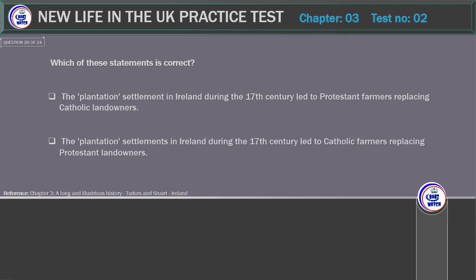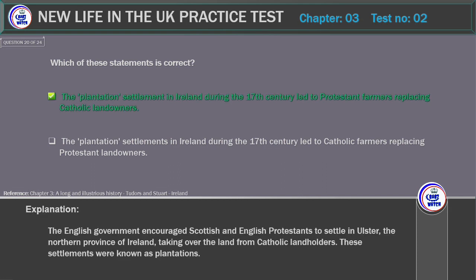Which of these statements is correct? A) The plantation settlement in Ireland during the 17th century led to Protestant farmers replacing Catholic landowners. Correct answer: The plantation settlements in Ireland during the 17th century led to Protestant farmers replacing Catholic landowners. Explanation: The English government encouraged Scottish and English Protestants to settle in Ulster, the northern province of Ireland, taking over land from Catholic landholders. These settlements were known as plantations.